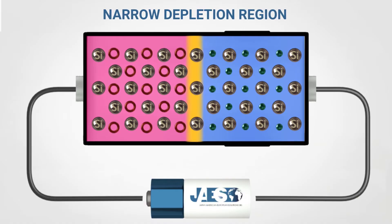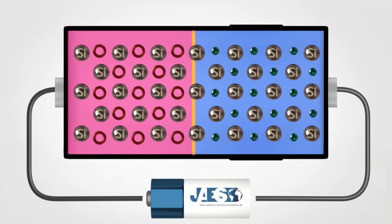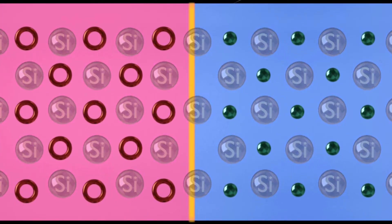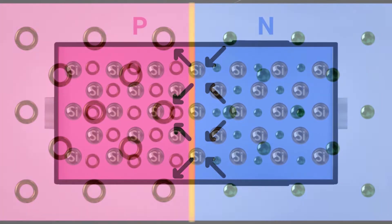Supposing now that our battery has enough voltage to overcome the potential barrier. This will cause the movement of the electrons driven by the electric potential imposed by the battery.